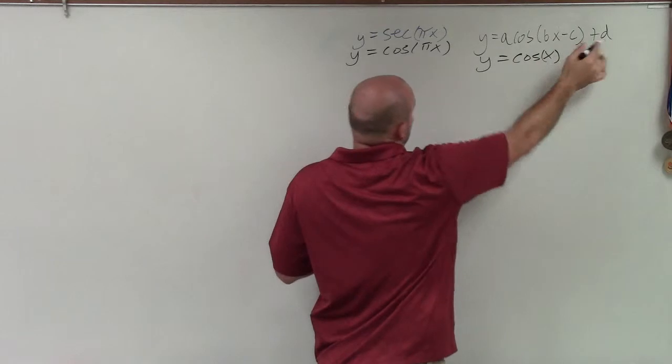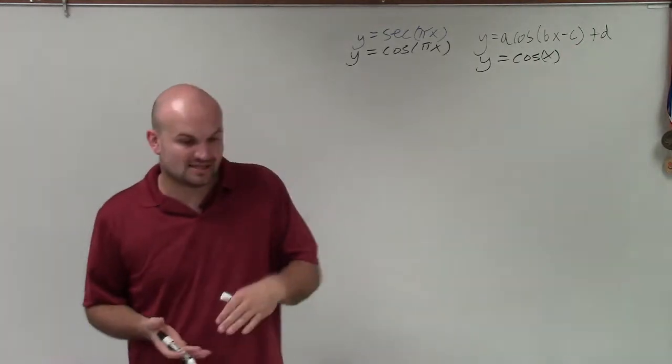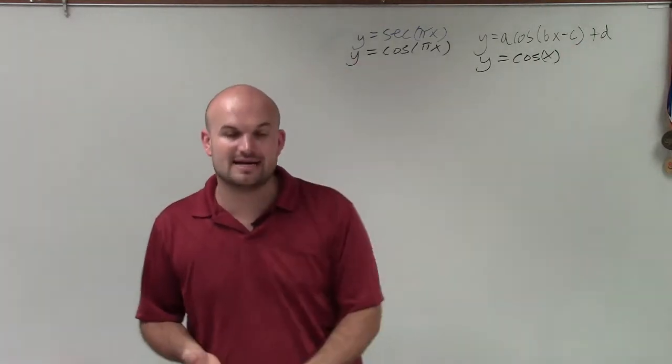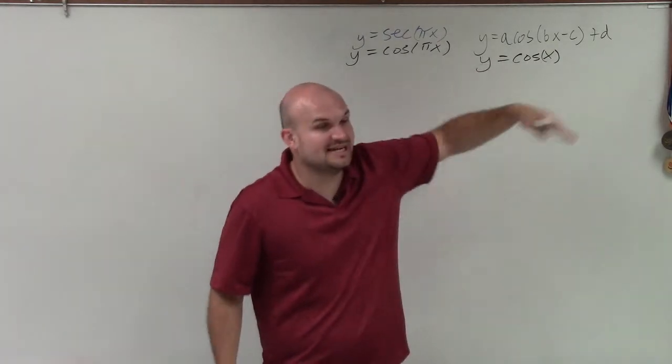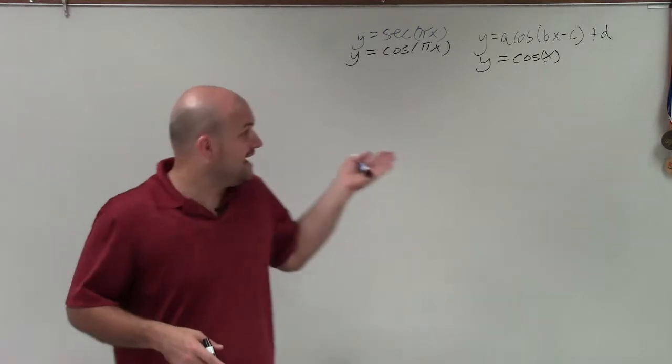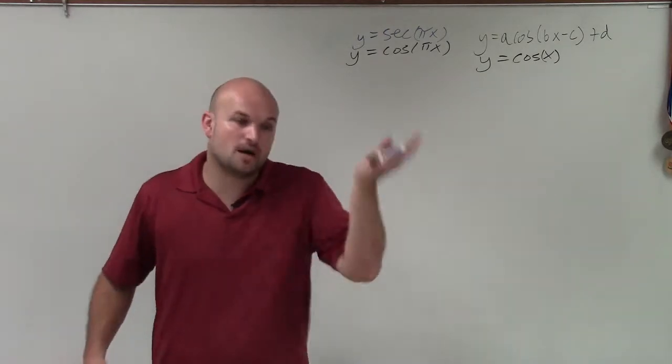So I don't have an a, I don't have a c, and I don't have a d. Remember, a is going to tell us the amplitude of cosine, how high and how low our max and our mins are going to be for the graph. Our c is going to help us determine our shifting left or right, and our d is going to help us determine our shift up or down.